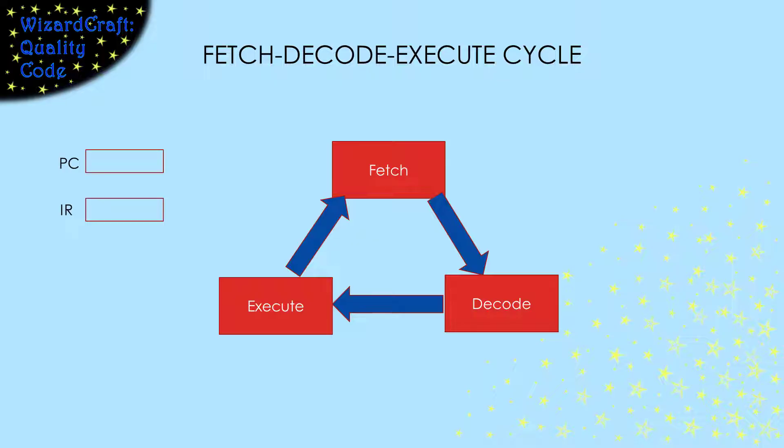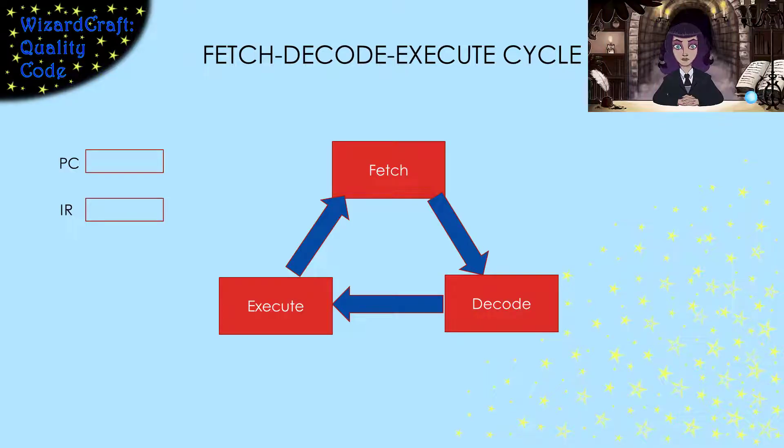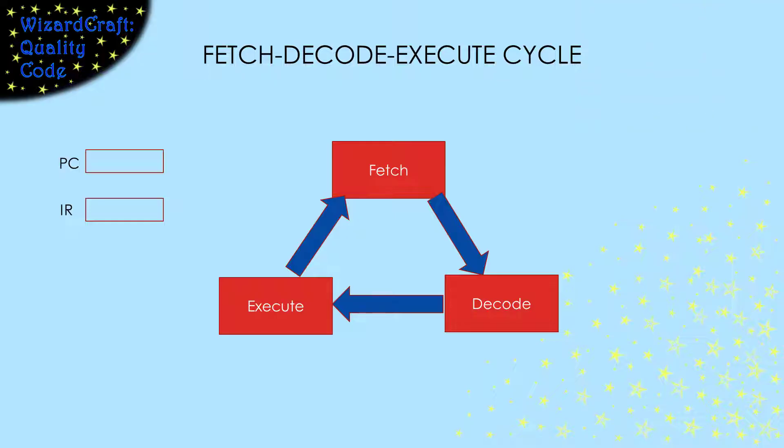There are two registers that are important for this cycle to work. Remember, registers are a set of special purpose storage locations that are inside the CPU. The program counter, or PC, holds the address of the next instruction. And the instruction register, IR, contains the instruction that we are currently working on.